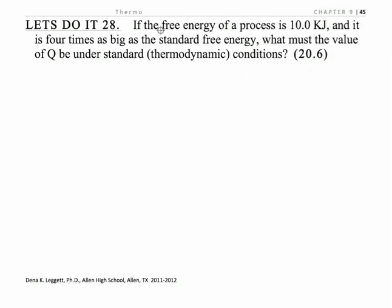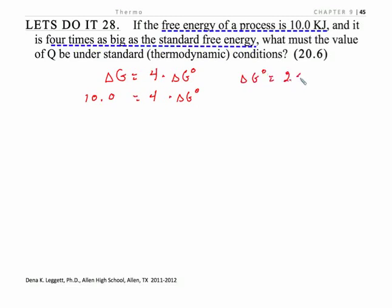Deep breath. One more. And we're done. This time they give me, the question gives me, the free energy of a process, and relates it, tells me that it's four times the size of the standard free energy. So that says that delta G is equal to four times delta G naught. Well, delta G is 10 kilojoules. So four times delta G naught. So delta G naught must be 2.5 kilojoules. So that's what that first statement says. Now they want us to solve for Q.